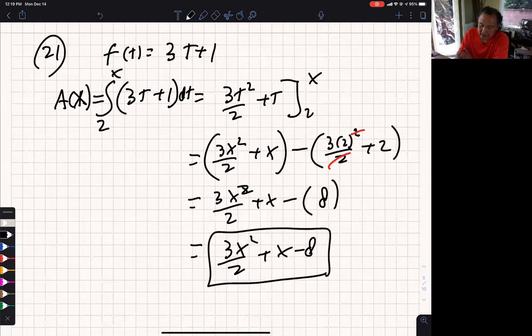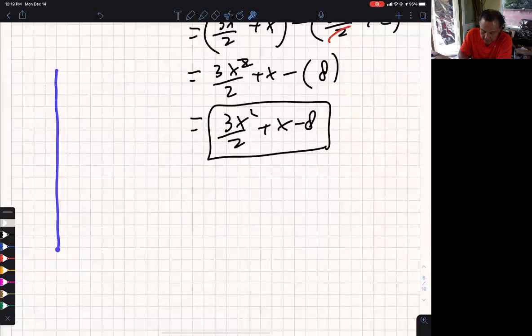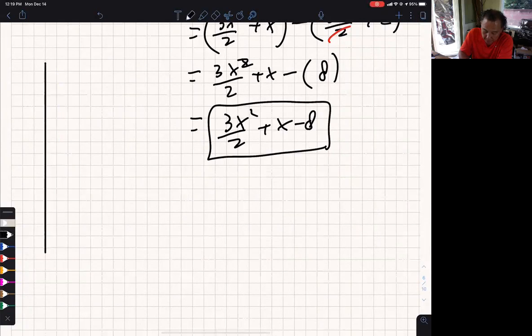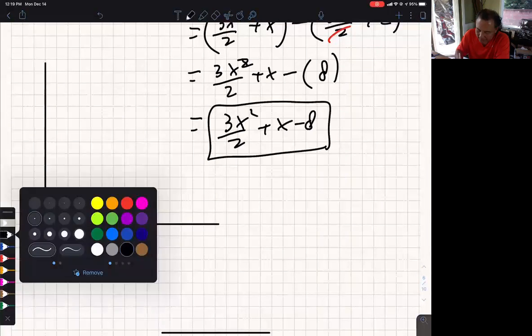That is the area function. What's it ask for next? Find and graph the area function. So we have to graph this. I'll plug points or do it on a graphing calculator. Let me see if this is a graphing calculator question. I see no calculator next to it. So we'll just plot points. I'll plug in values and make a table of values.